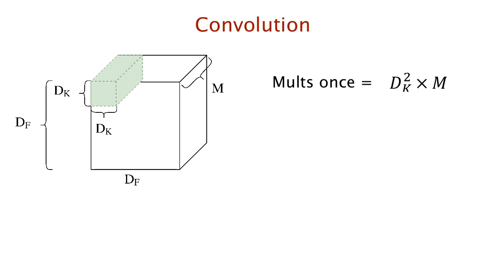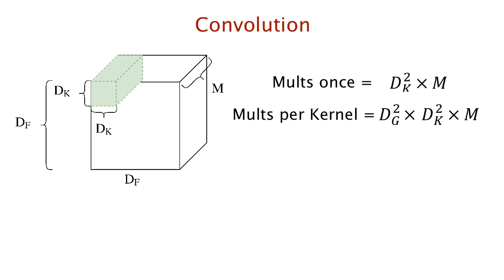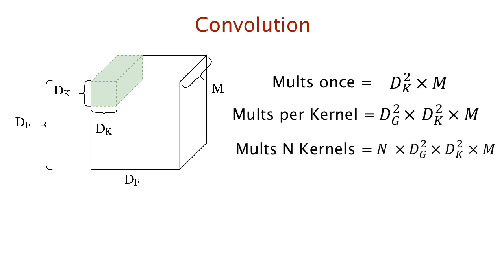We slide this kernel over the input, performing dg convolutions along the width and dg convolutions along the height — hence dg × dg convolutions overall. So the number of multiplications for one kernel over the entire input f is dg² × dk² × m. For n such kernels, the total number of multiplications becomes n × dg² × dk² × m.